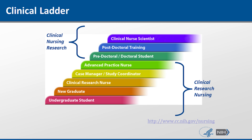Here is a clinical ladder where you'll see some nurses start as an undergraduate student, then lead to a new grad, clinical research nurse, go up to a study coordinator or case manager, advanced practice nurse where you'll see some nurse practitioners, pre-doctoral and doctoral students, post-doctoral training, and at the top you'll see clinical nurse scientists. These are the variety of roles you can see clinical research nurses in.